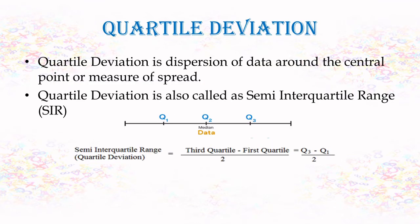Quartile deviation is defined as the dispersion of data around the central point, or measure of spread. It is also called the semi-interquartile range. Data can be divided into four quarters, for which we need three different points. After arranging the data, the first part is from the lower limit to Q1, then Q1 to Q2, Q2 to Q3, and Q3 to the last limit of the data.